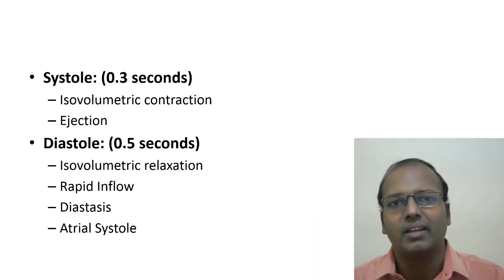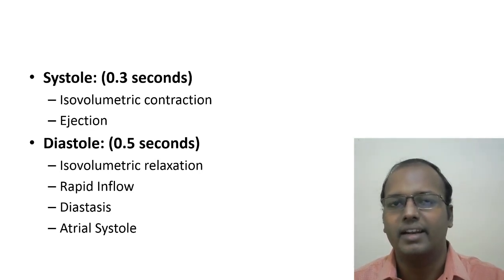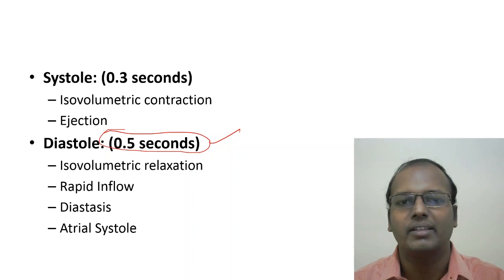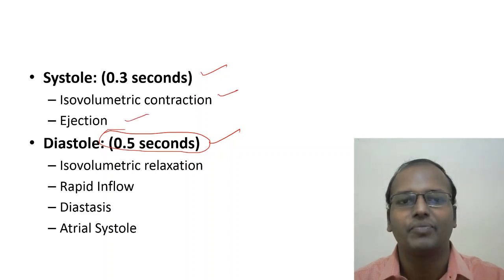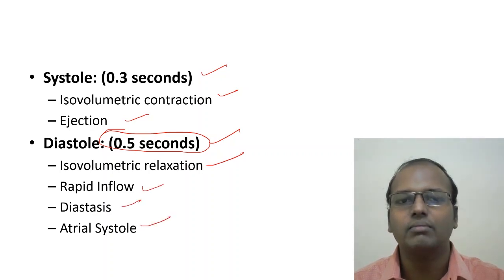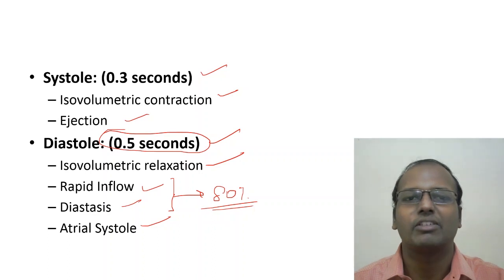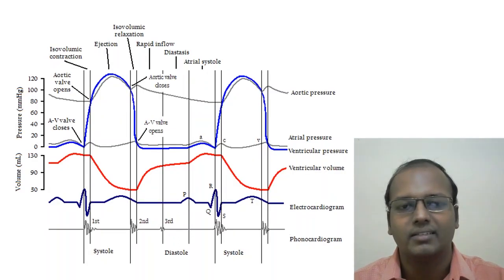For naming murmurs, we use ventricular systole and diastole, not atrial systole or diastole. Ventricular systole normally lasts 0.3 seconds and ventricular diastole lasts 0.5 seconds. In tachycardia, the 0.5 seconds can decrease. Systole has two phases: isovolumetric contraction and ejection phase. Diastole has four phases: isovolumetric relaxation, rapid inflow, diastasis, and atrial systole. During rapid inflow and diastasis, around 80% of blood enters from the left atrium to the left ventricle.